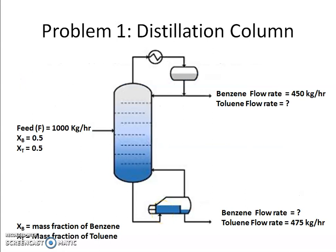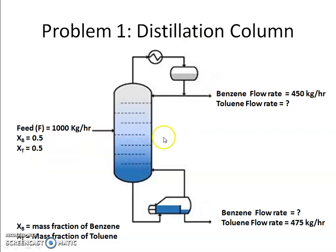Let's apply this balance equation to some simple systems. We start with a distillation column. The problem: a feed of 1000 kg/hr is fed to a distillation column. The feed contains benzene and toluene in equal quantities — mass fractions x_B and x_T — so 500 kg of benzene and 500 kg of toluene are entering. After distillation, a toluene-rich phase exits from the bottom (since toluene is heavier than benzene), and benzene exits as the distillate.